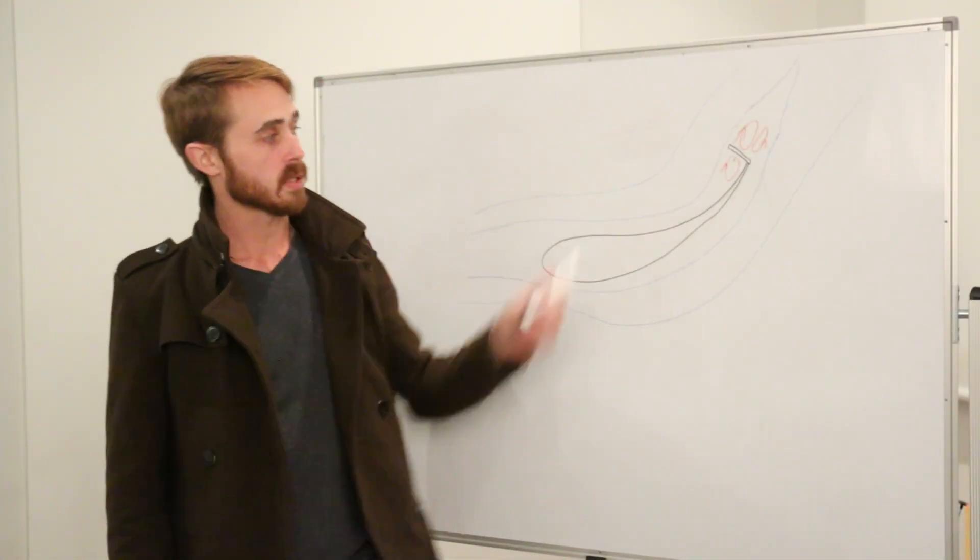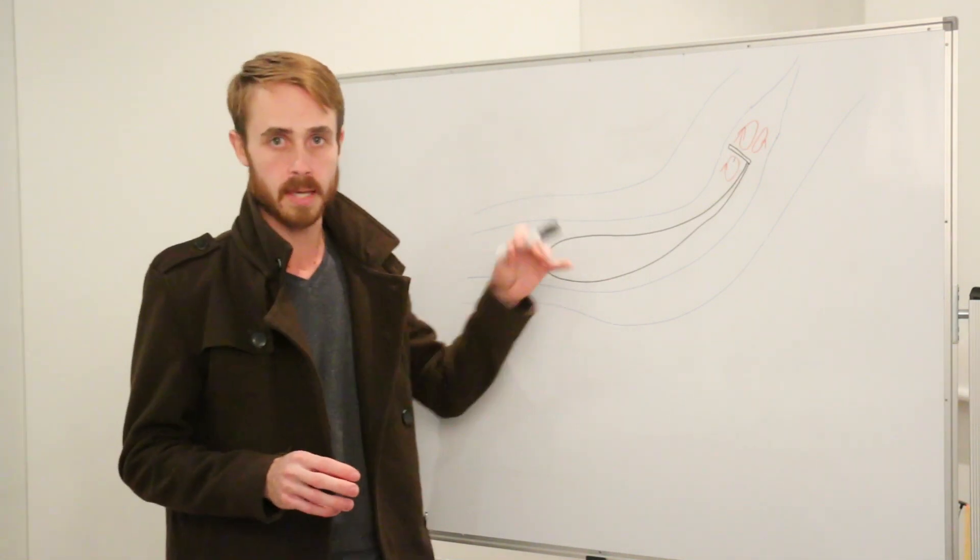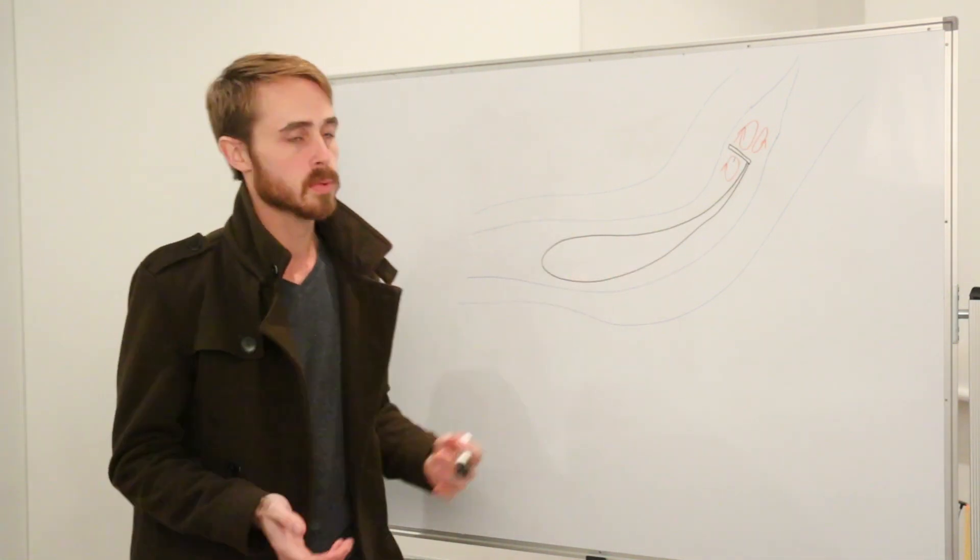Today we're going to be looking at gurney flaps. Gurney flaps are basically small attachments or flaps on the end of your wing that assist with your lift.